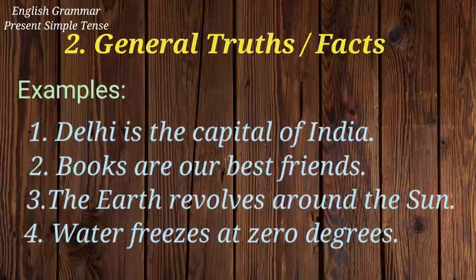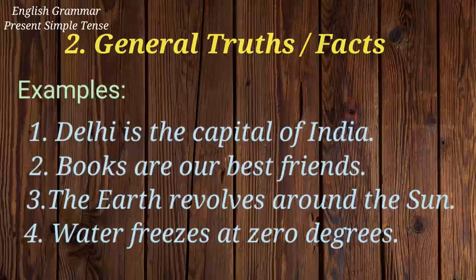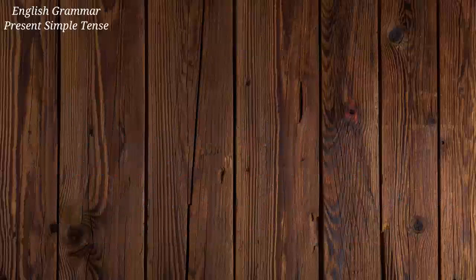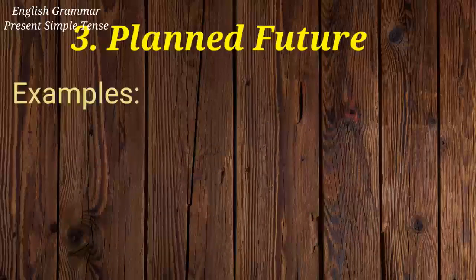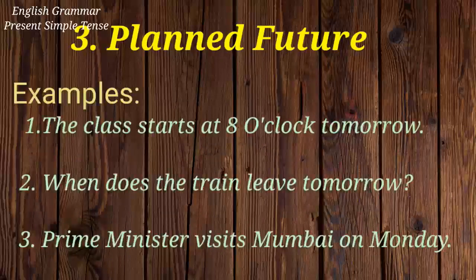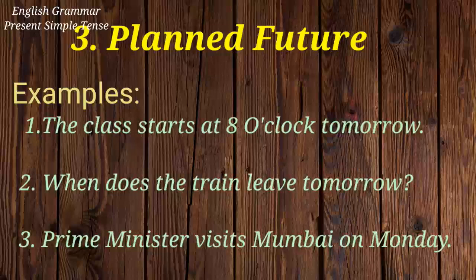More examples of general facts: books are our best friends, the earth revolves around the sun, water freezes at zero degrees. It is also used to express planned future. For example: the class starts at 8 o'clock tomorrow, when does the train leave tomorrow, prime minister visits Mumbai on Monday.